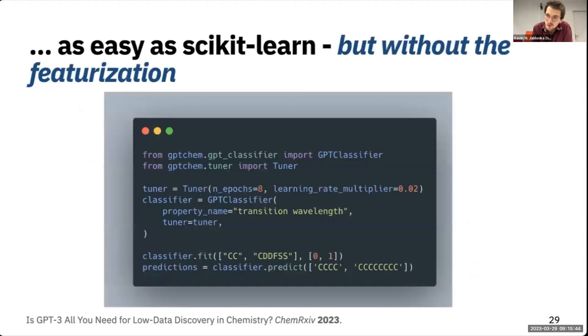You can even go beyond this and try whatever you want. We wrapped this into an SK-Learn-like API, so you can just import this classifier or regressor, put in a list of text descriptions and labels, fine-tune the model, and then predict later on. You have the SK-Learn-like experience, but without any featurization or any of those hassles that usually come with doing ML in material science.